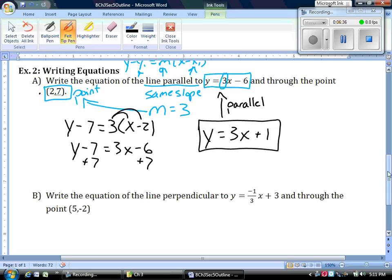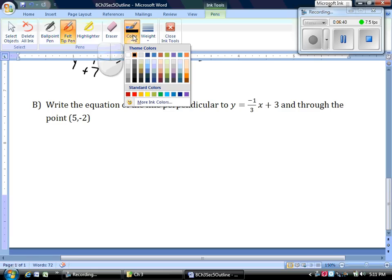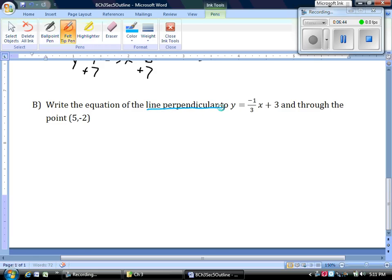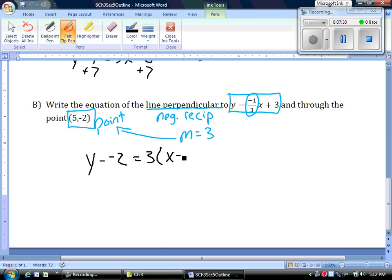One more example. We want to write the equation of the line perpendicular this time, perpendicular to y equals negative one third x plus three and through the point (5,-2). We need a point and a slope. There's our point. Our slope is the negative reciprocal. Since this slope is negative one over three, the one I'm going to use is positive three. Let's take my point and my slope and plug them in. Y minus negative two equals m times x minus five.